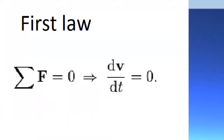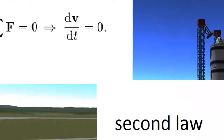The first law is: an object at rest will remain at rest unless acted on by an unbalanced force. An object in motion continues in motion with the same speed and in the same direction unless acted upon by an unbalanced force. This law is called inertia.